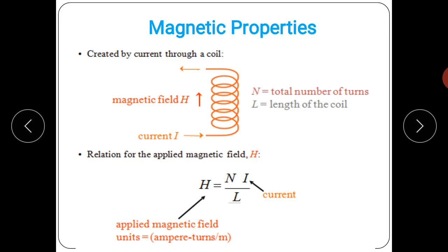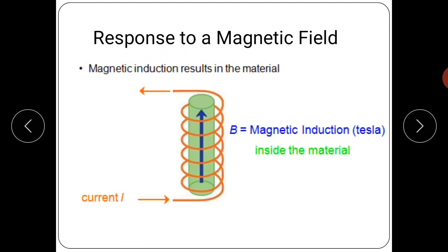Here N is the number of turns, I is the flow of current, and L is the length of the conductor. The magnetic field unit is ampere-turns per meter.